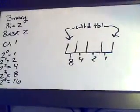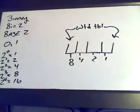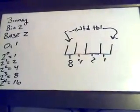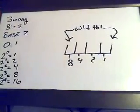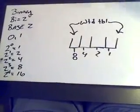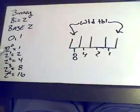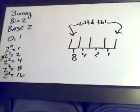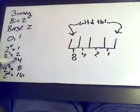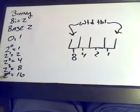And here we start to look at the operations for binary. Binary gets its name from its root word by, by meaning 2. Binary is a base 2 numbering system. Down here on the far bottom left corner, you have 2 to 0 is 1, 2 to the 1 is 2, 2 to the 2 is 4, 2 to the 3 is 8, 2 to the 4 is 16.